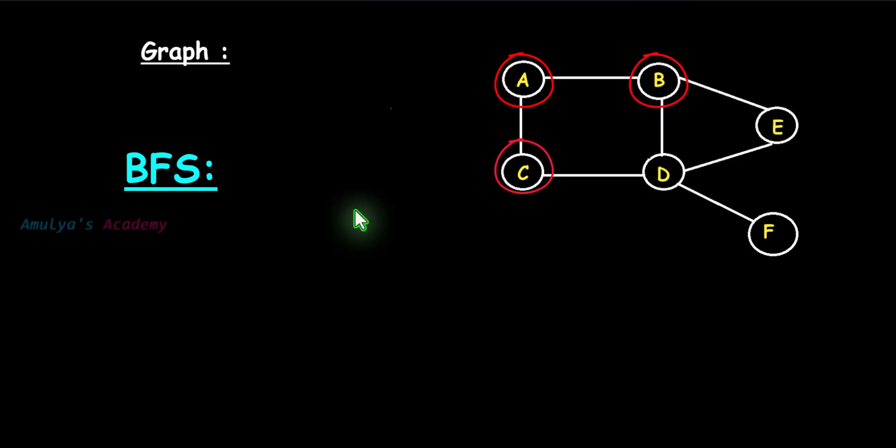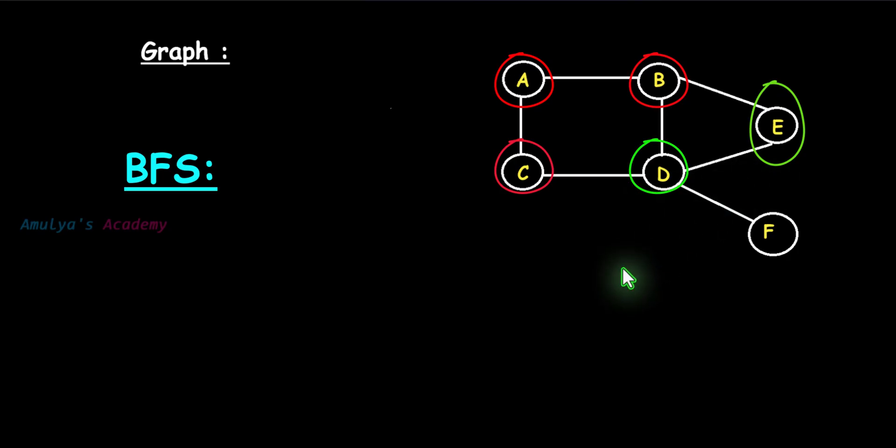You can visit B first then C, or C first then B. So A, B, and C are the visited nodes. The next step is to visit all the unvisited nodes connected to the nodes visited in the previous step. We visited B and C, so next we visit their connected nodes D and E.